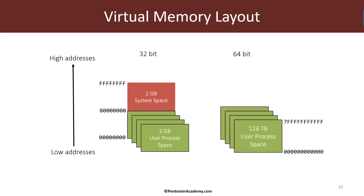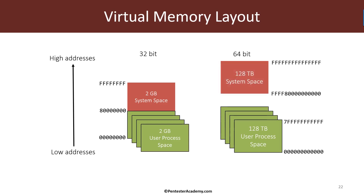64-bit Windows is exactly the same, however the numbers are different. We have 128 terabytes of user process address space on Windows 8.1 and later for each process, and we have 128 terabytes of system address space. The kernel space or system space addresses are absolute, but addresses in user space are relative to the appropriate process. So we need to be careful if we want to access user-mode addresses from the kernel debugger.